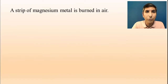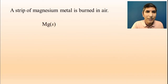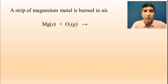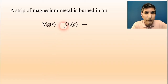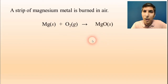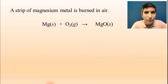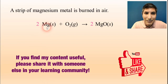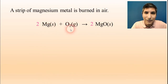In the next example, a strip of magnesium metal is burned in air. We have magnesium metal, Mg solid, and anytime you burn something in air, you're reacting it with oxygen gas, O2. The ionic compound formed from this combination is magnesium oxide, written as MgO, because magnesium is +2 and oxide is −2. When you balance that, you balance the magnesiums and then the oxygens. Magnesium is being oxidized and the oxygen gas is being reduced.